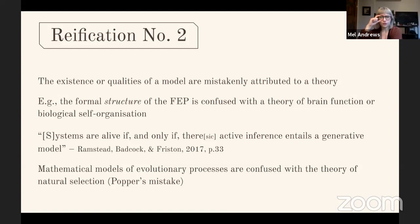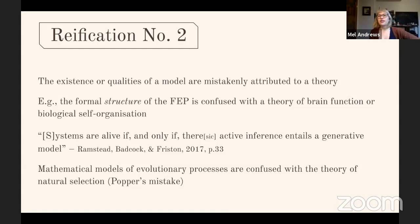Ramstead, Constant, and Friston tell us that systems are alive if and only if active inference entails a generative model. But here, active inference and generative modeling refer to math, while what it means to be a living system is a theoretical construct. The idea that the math alone will tell us whether systems are alive is a category mistake — the math can't tell us that. We can build a conception from that math of what it means to be alive, but that doesn't flow as a direct consequence from the formal techniques.